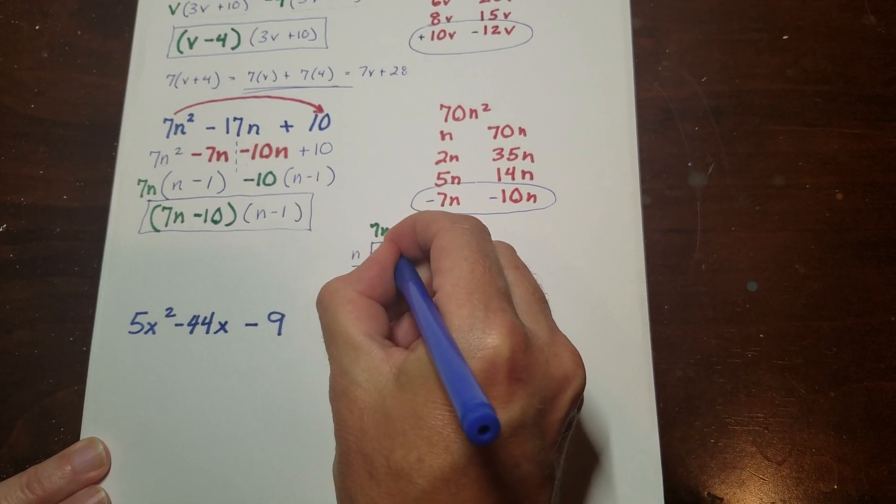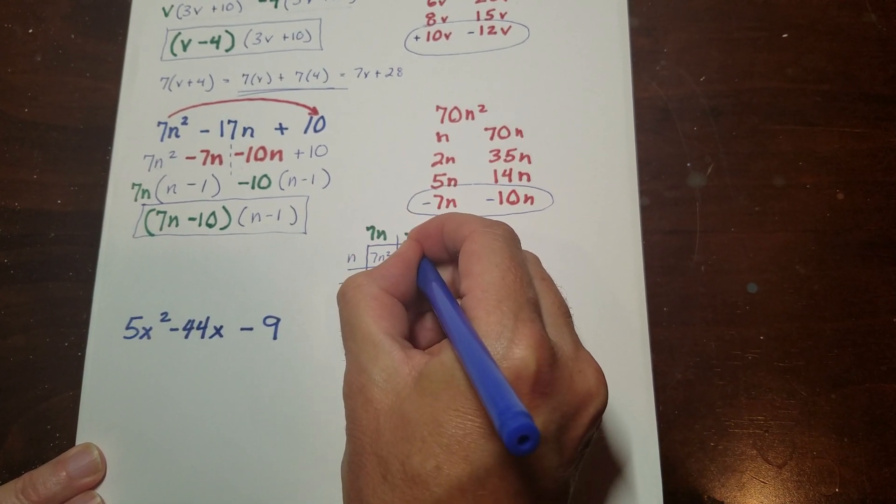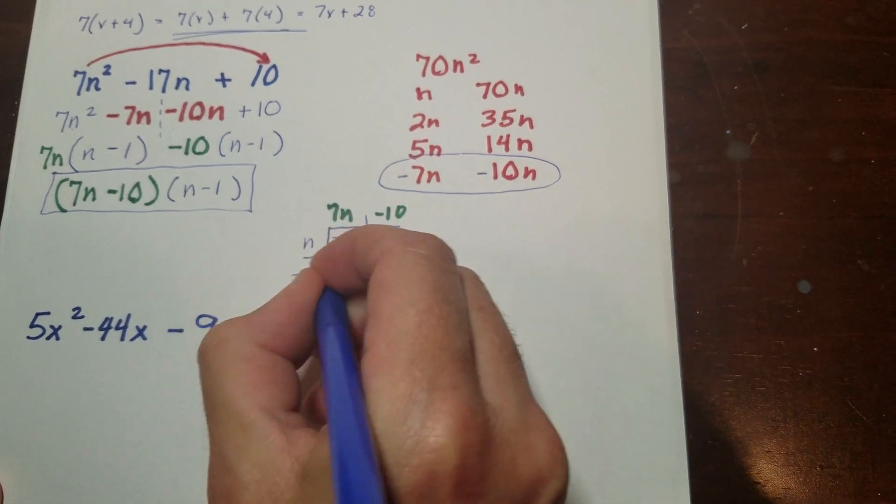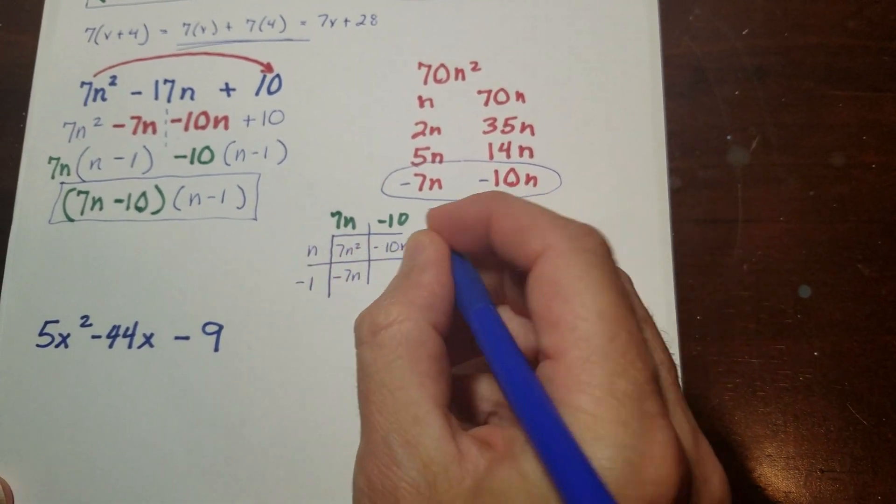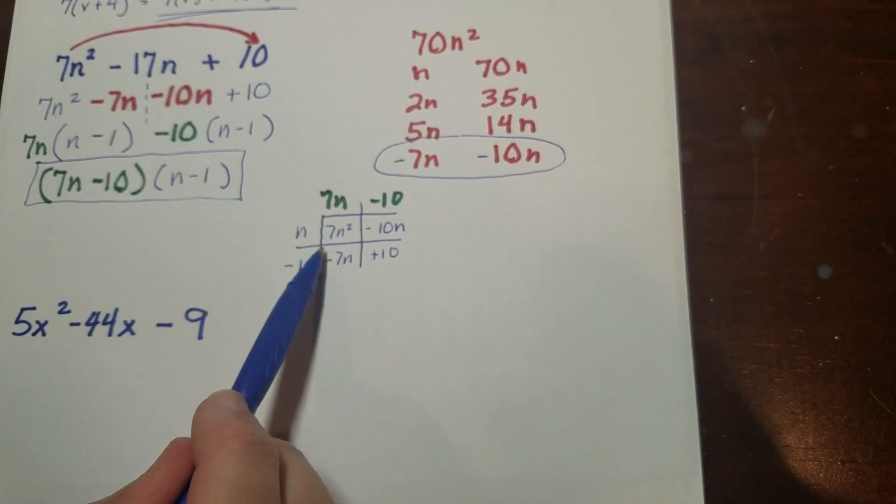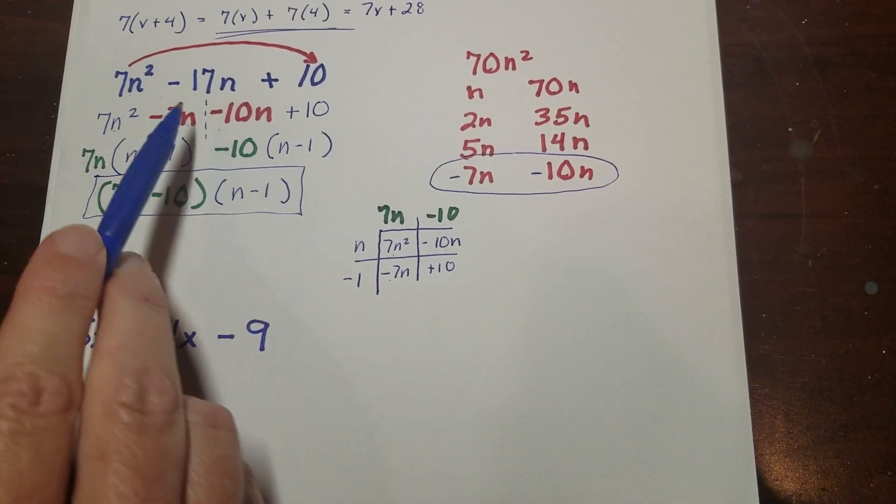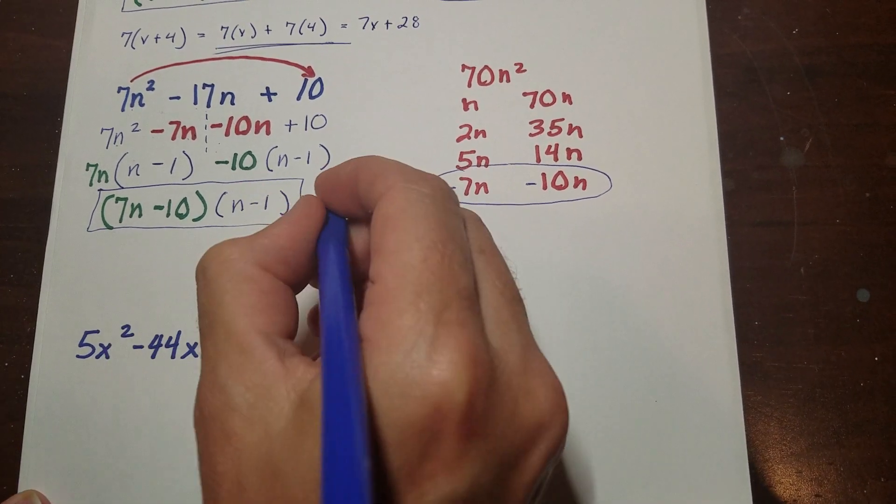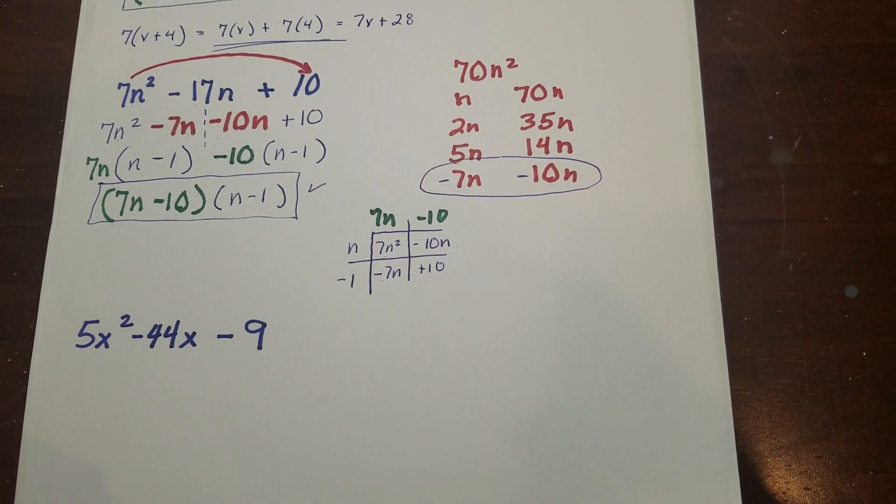So you got 7n squared minus 10n. And then here I have a minus 7n and then a plus 10. And you can see there's my 7n squared. These two numbers here add to that one. And there's my 10. So I know that this checks out. So you can always check your work that way.